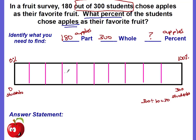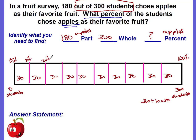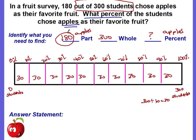Step three: divide the whole amount, 300, into 10 equal parts. 300 divided by 10 equals 30, so each part is 30. I like to write 30 inside each box. Then label the percents: 10%, 20%, 30%, 40%, 50%, 60%, 70%, 80%, 90%, and 100%. Pause if you need to write all of this down.